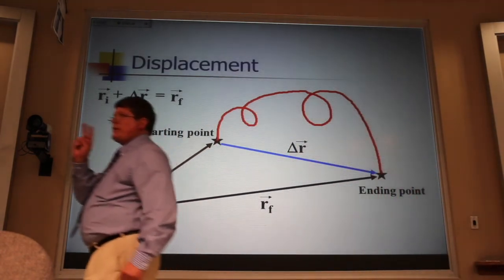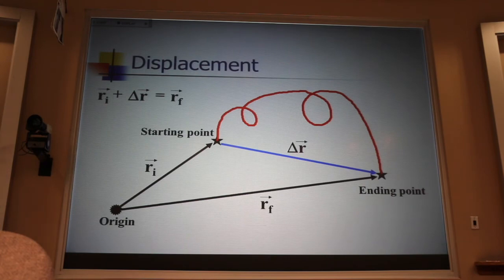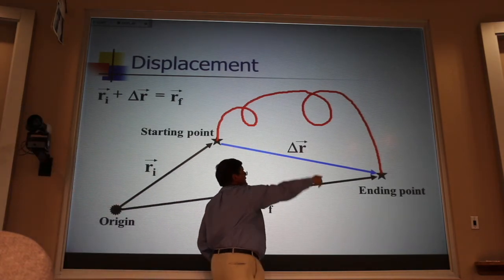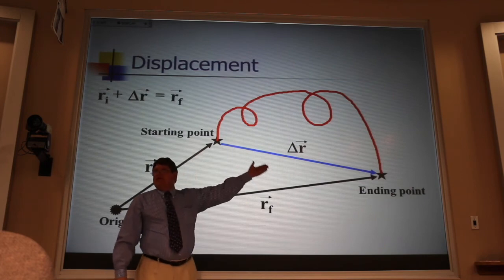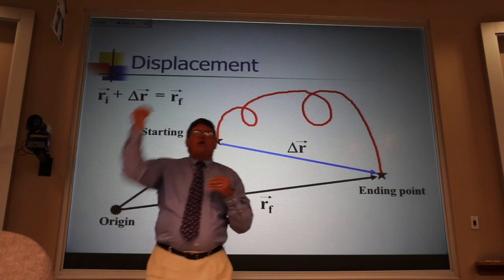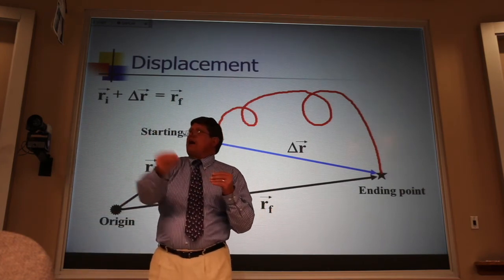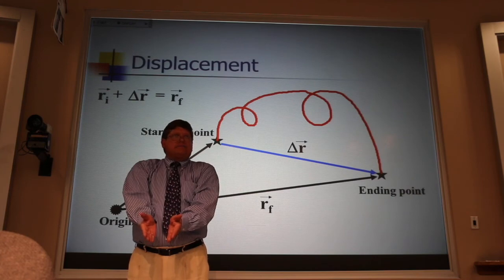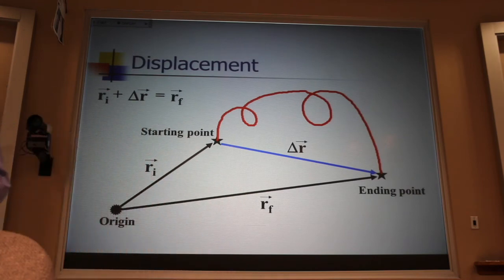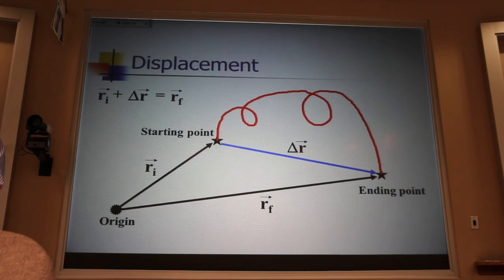And I want to point out two important things about that displacement. First of all, it's very, very different than the distance traveled. If this is the wander that you get in the woods, the displacement vector is as the crow flies. If I were to start right here and go all the way around the earth as fast as I could and come back right here, my displacement would be zero. My distance traveled would be a huge number. Okay, so very different concepts.